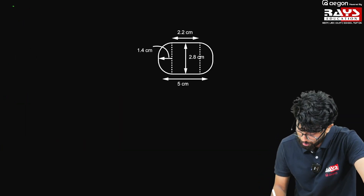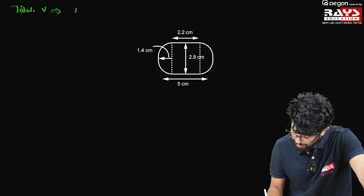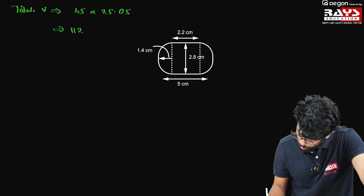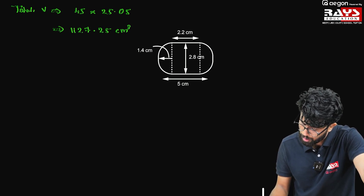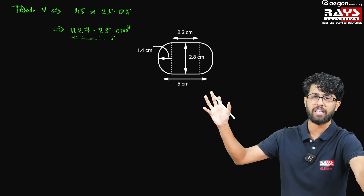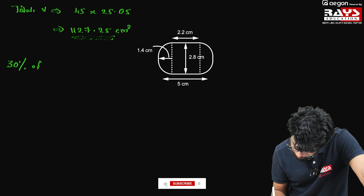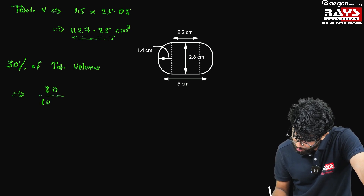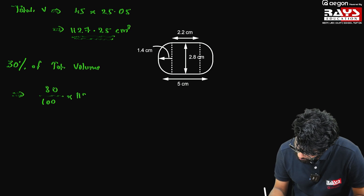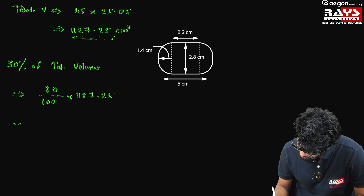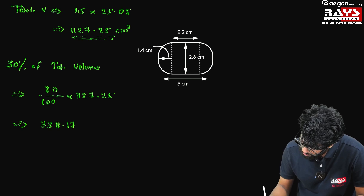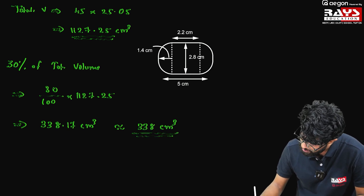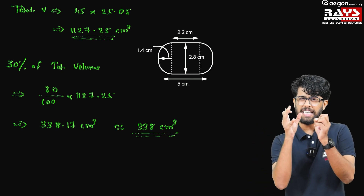To find the total volume, we multiply by 45. So 45 into 25.05 gives 1127.25 cm³. Since we have the total volume, we just find 30% of it. So 30 by 100 into 1127.25. While computing this, we get 338.17 cm³, or you can approximately write it as 338 cm³. This is the final answer.